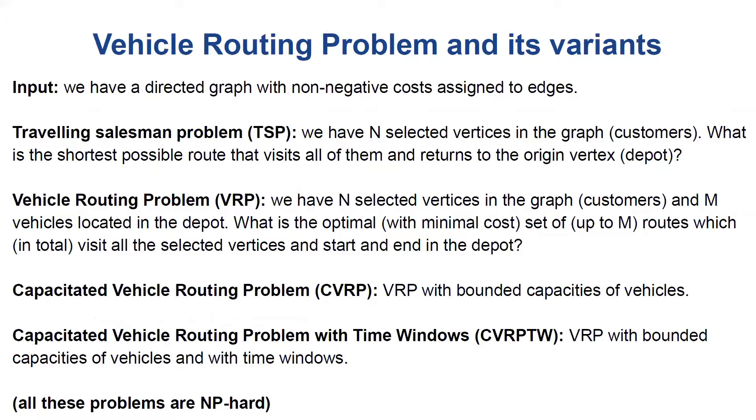Let's first recall what's the vehicle routing problem. We have a directed graph with non-negative costs assigned to edges. We also have N selected vertices in this graph representing the customers we want to visit. The question is, what is the shortest possible route that visits all of them and returns to the origin vertex, the depot?